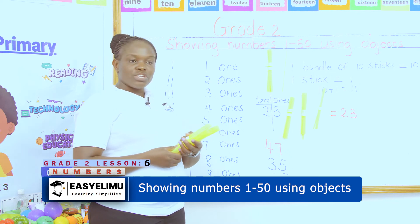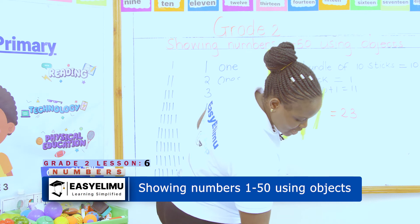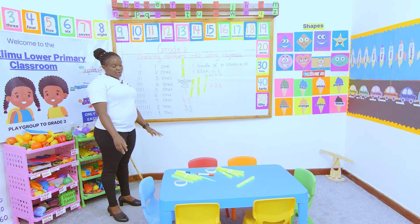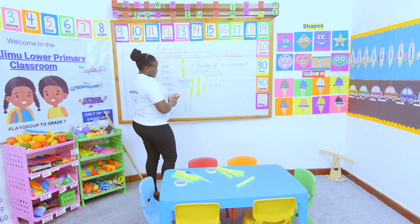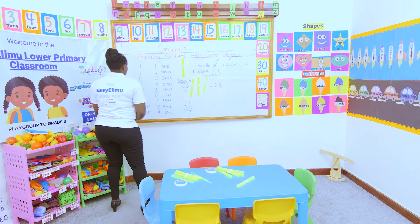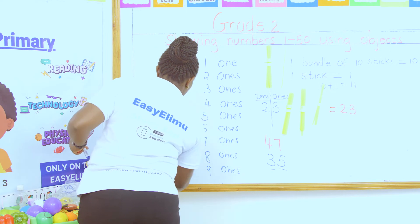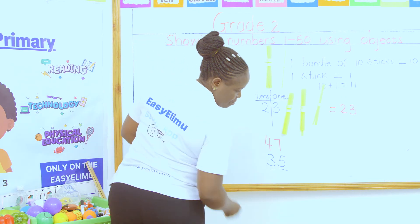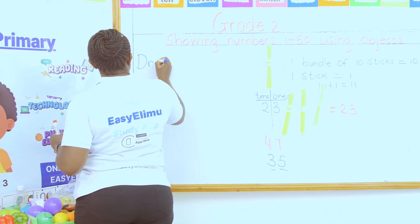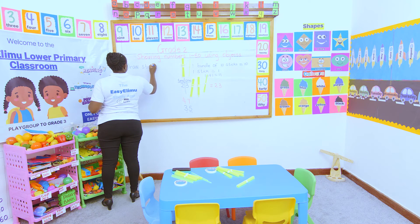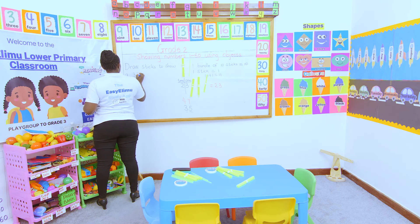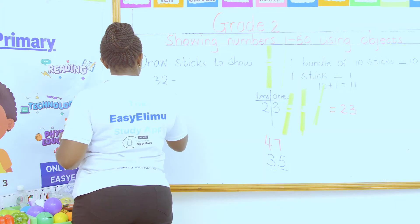Is there any problem in showing numbers one to fifty using objects? There is no problem once you know the place value — the number becomes very easy. During your free time, draw sticks to represent these numbers: draw sticks to show 32, 28, and 44.